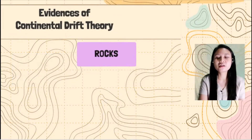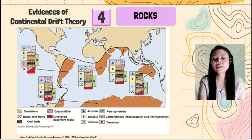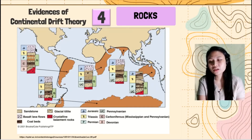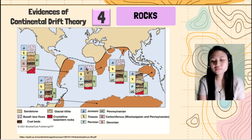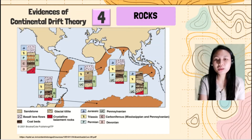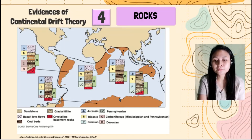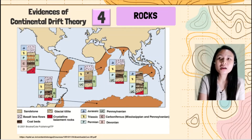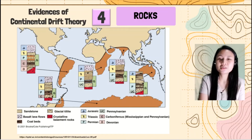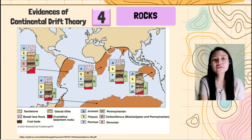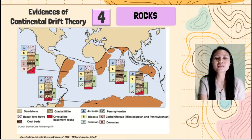And then we have the rocks. We have here the legend of rocks found in different continents. As you can see here, the legend seemed to be the same, meaning the types of rocks in these continents are the same. Remember, the types of rocks that are formed depend on the place. We have the sedimentary rocks, igneous rocks, and the metamorphic rocks — matatagpuan yung mga rocks na yun in some particular places.